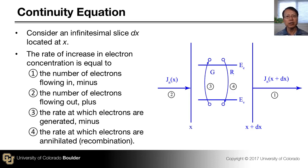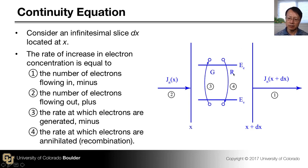Recombination mechanisms include radiative recombination, the Shockley-Hall-Read process, surface recombination, and Auger recombination — all giving a recombination rate. If multiple recombination mechanisms are at work, the total recombination rate is the sum of all individual recombination rates.